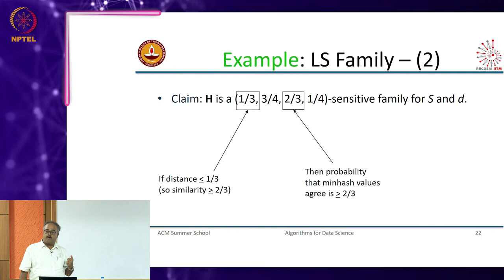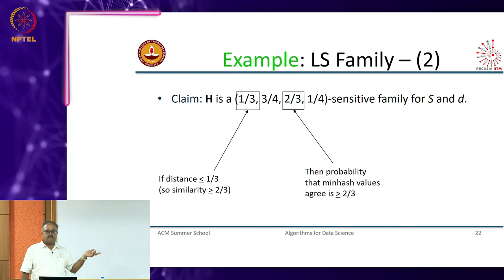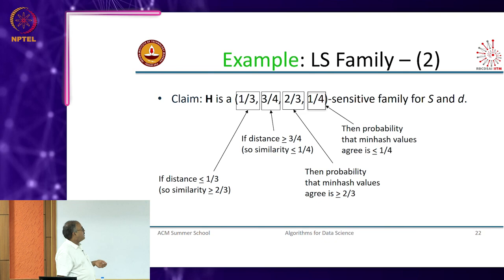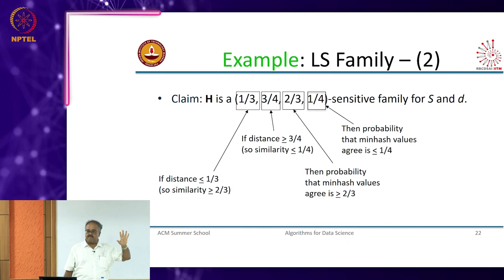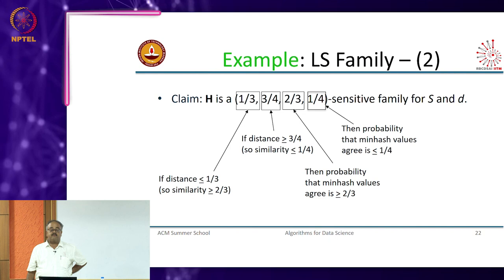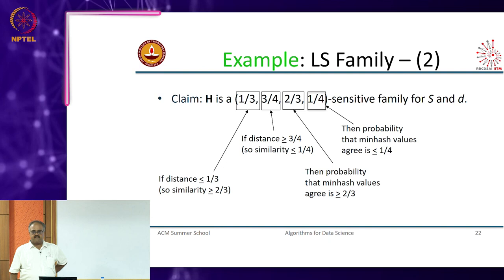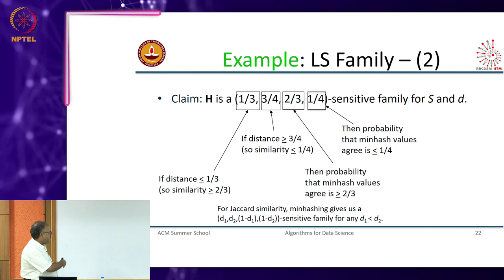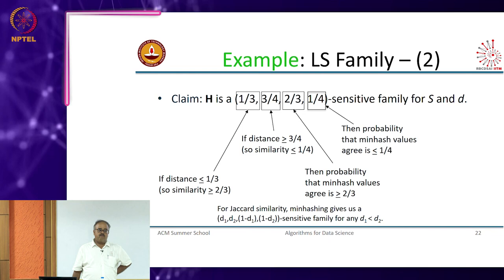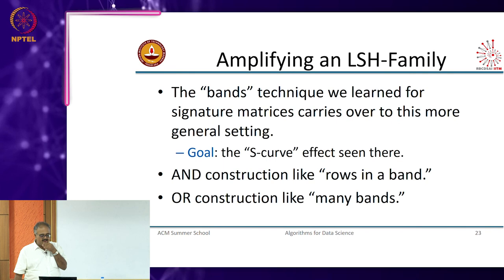If the distance is less than one-third then the probability the min hash values agree is greater than two-thirds. Likewise, if the distance is greater than three-fourths then the probability that the min hash values agree is less than one-fourth. For Jaccard similarity, generalizing min hashing gives us a d1, d2, 1 minus d1, 1 minus d2 sensitive family for any d1 and d2.